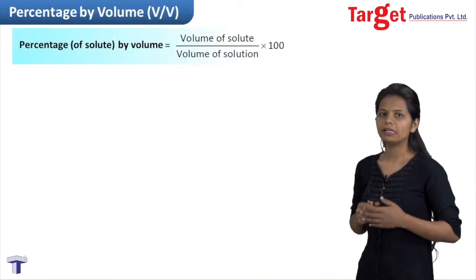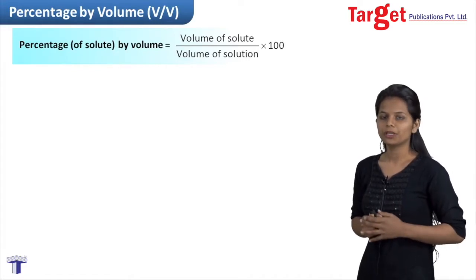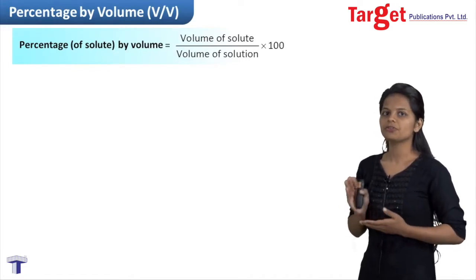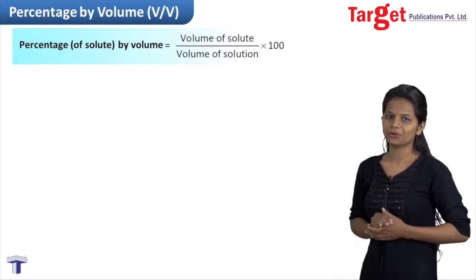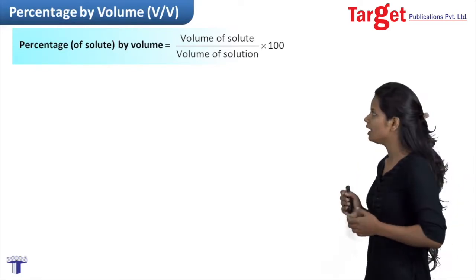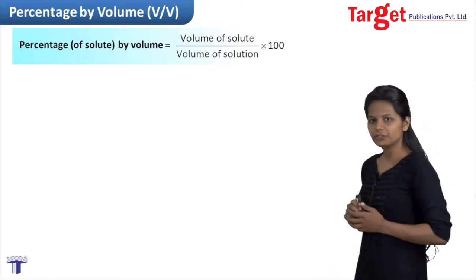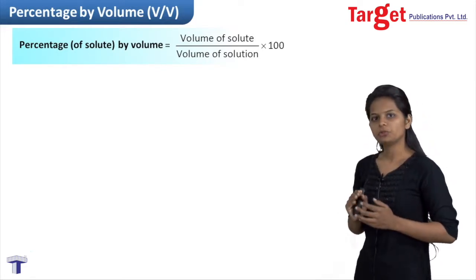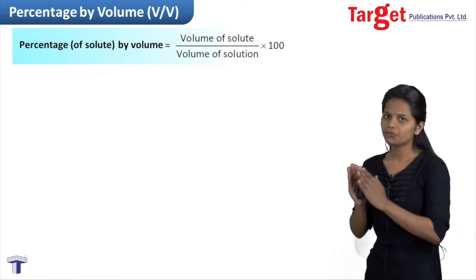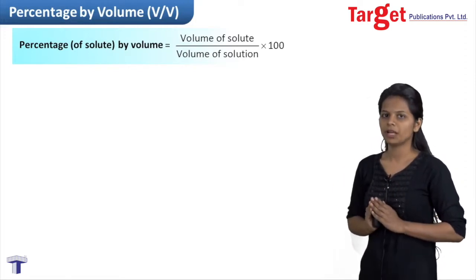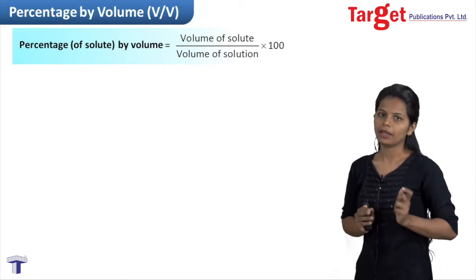The next way of expressing concentration is percentage by volume, which is similar to percentage by mass but with a few differences. Percentage by volume means volume of solute divided by volume of entire solution, multiplied by 100. The foremost thing to keep in mind is that volume is not an additive quantity like mass.